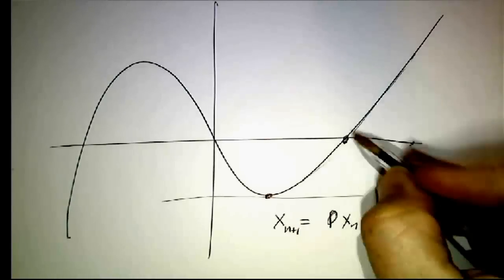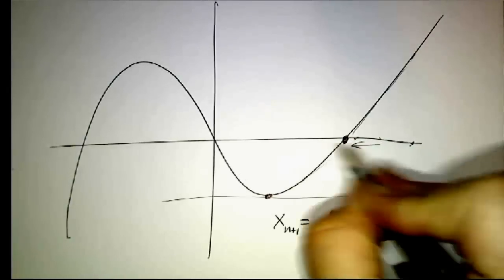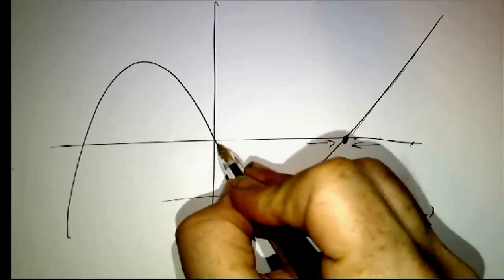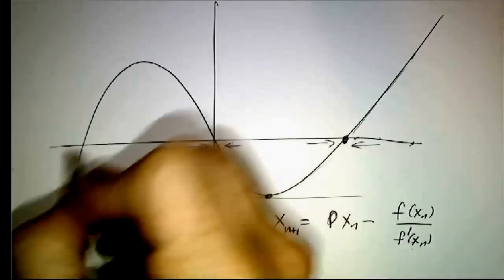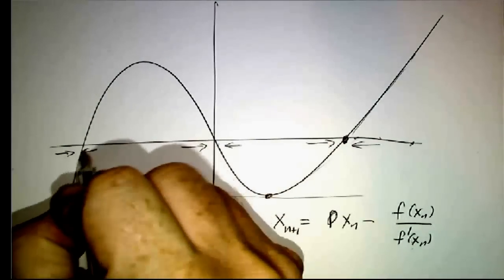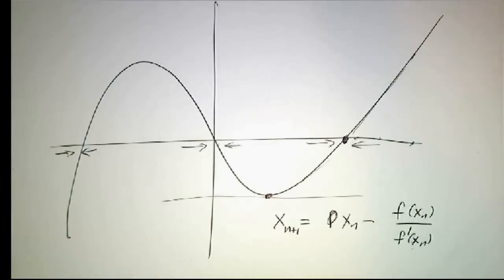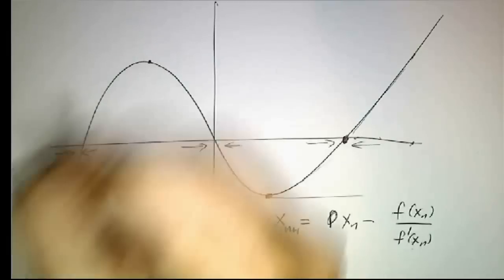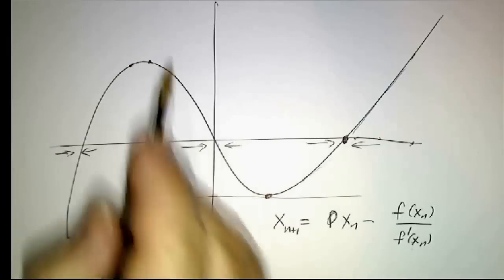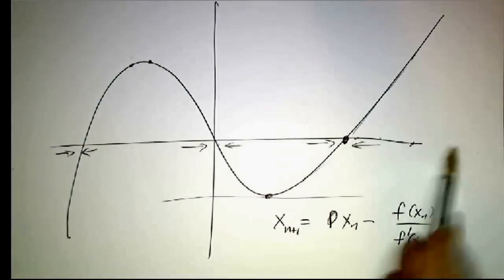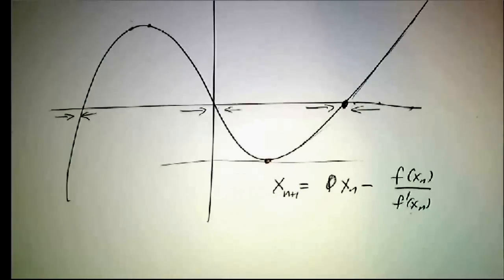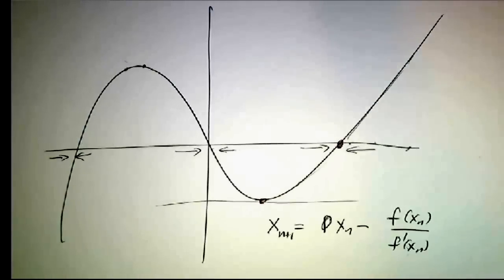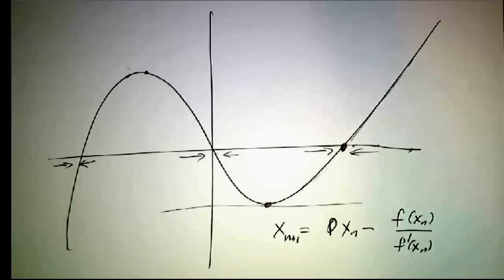So if you start close to this point, you're going to home in on this point. If you start close to this point, you're going to home in on this point. If you start close to this point, you're going to home in on this point. But if you start far away from one of them, if you start way up here, or way up here, you could find yourself very, very, very far away. So Newton's method requires a good initial guess. If you don't have a good initial guess, you're not in business.